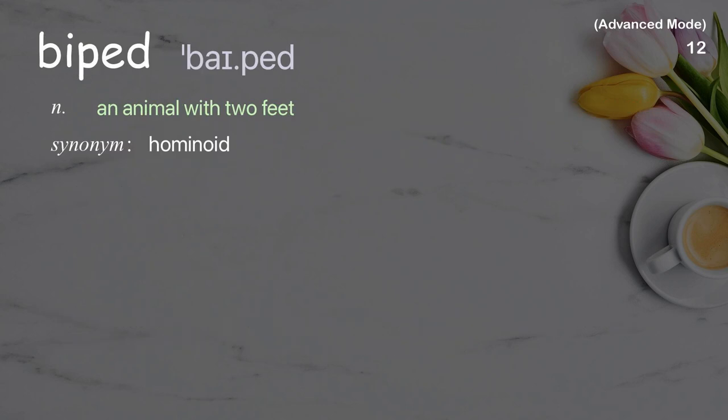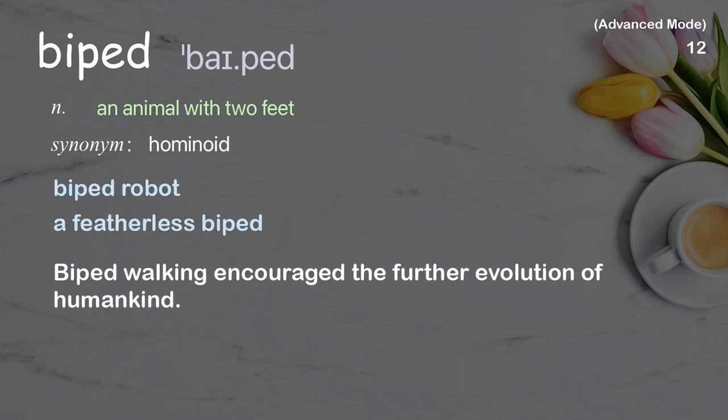Biped: an animal with two feet. Examples: biped robot, a featherless biped. Biped walking encouraged the further evolution of humankind.